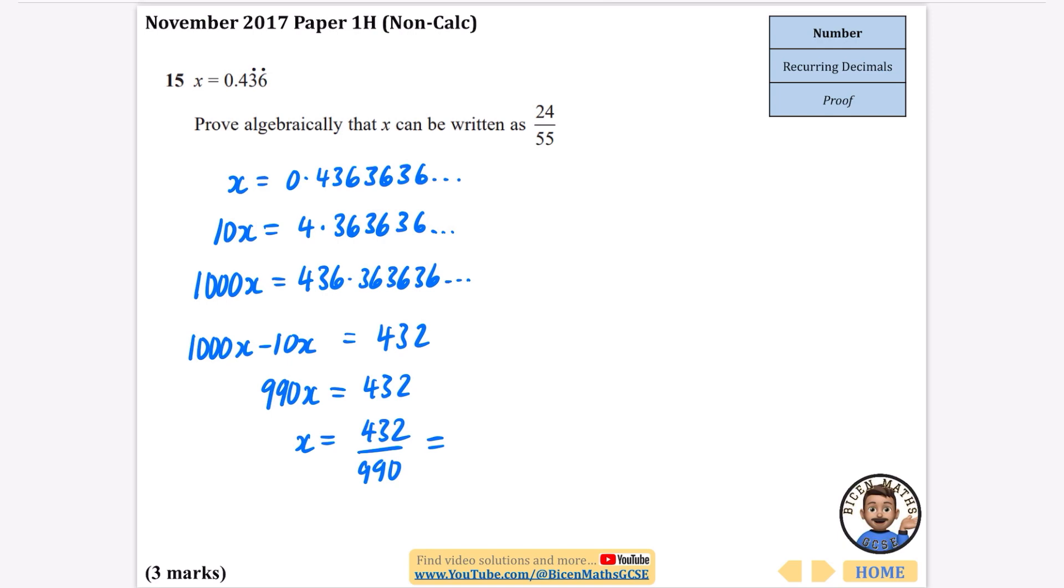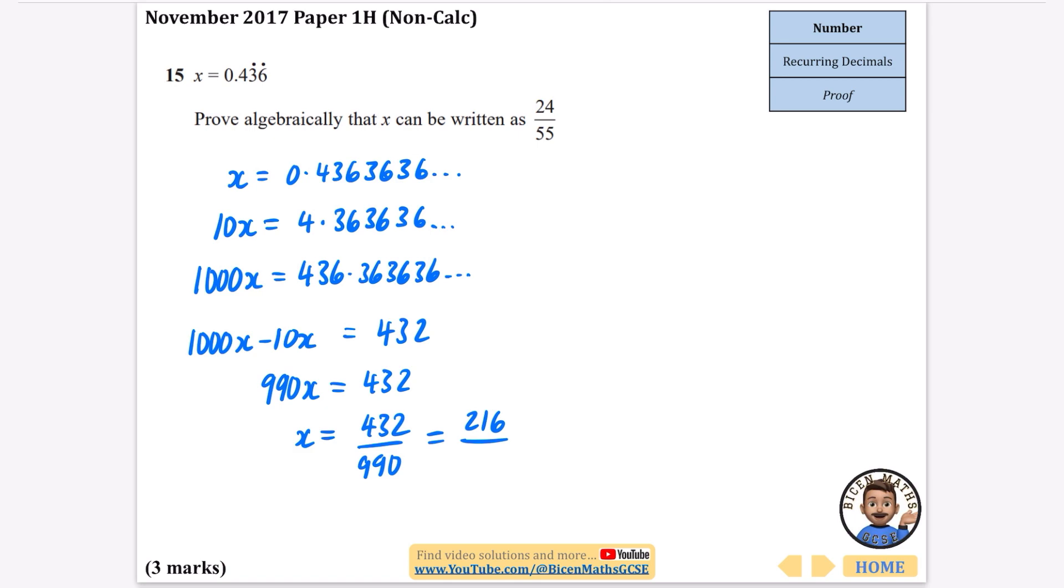There's a clue that it's going to go down to 24 over 55, so I'm going to start off by recognizing that 990 and 432 need simplifying. If it's going to go down to 55, I'm going to half the top and bottom. If I half the top I get 216, and if I half the bottom that is 495. Now I wonder if there's anything else they should have in common. You could check if they're in the three times table by adding the digits. 2 and 1 and 6 adds to 9, so that divides by 3. 4 and 9 and 5 adds to 18, so yeah, they're both going to divide by 3.